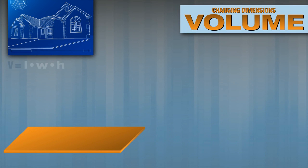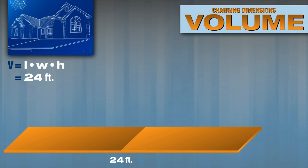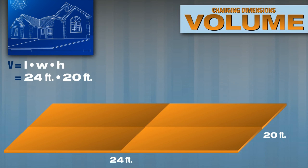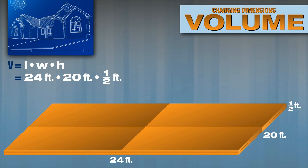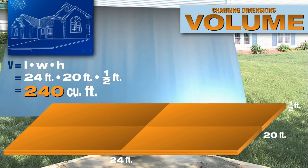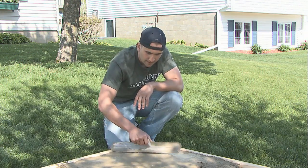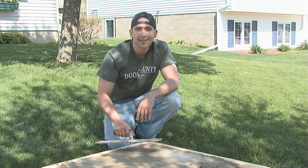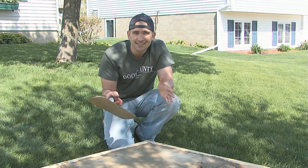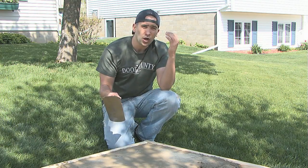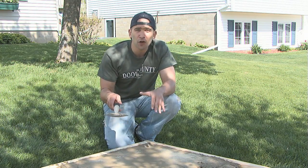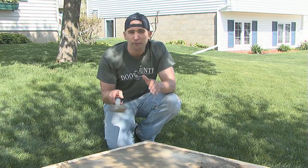The owner wanted to double the dimensions of the patio to 24 feet long by 20 feet wide, and double the thickness of the cement to 6 inches, or one-half foot. The volume of cement needed for the new patio is 240 cubic feet. Think about that — does that make sense? The volume of the old patio was 30 cubic feet and the volume of the new patio is 240 cubic feet.